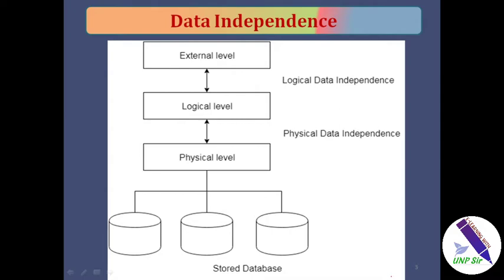As we saw in the three-schema architecture topic, the goal of the three-level or three-schema architecture is to keep users and physical data separate. And the separation or data abstraction is achieved through data independence. In this figure, these are the users. In the old times, before three-level architecture, users were directly attached with the database.